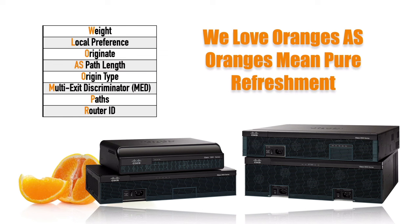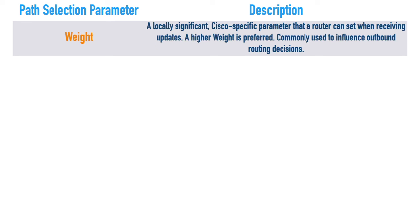Let's begin with weight. Weight is something we only see on Cisco routers - it's a Cisco-specific path attribute and doesn't get communicated to anybody else in the autonomous system, so we say it's locally significant. It's a value examined by only one router. If that router has two paths - one to a faster ISP and one to a slower ISP - we could use a route map to assign a higher weight to routes learned from the faster neighbor. The default weight is zero, and higher weight is more preferred.